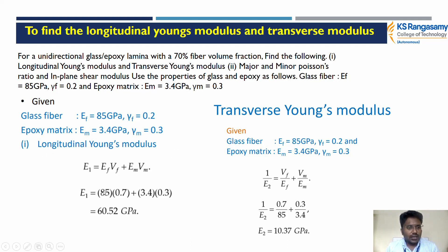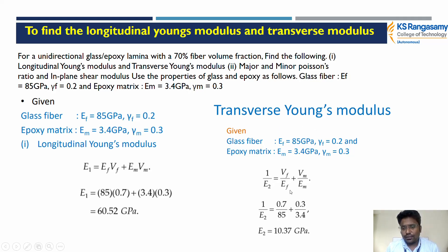First, we calculate the longitudinal elastic modulus: E1 = Ef·Vf + Em·Vm. Substituting, E1 = 60.52 GPa. Similarly, for the transverse modulus, the reciprocal formula gives: 1/E2 = Vf/Ef + Vm/Em. Substituting, E2 = 10.37 GPa. Comparatively, the longitudinal modulus value is much higher than the transverse modulus — the rule of mixture holds.